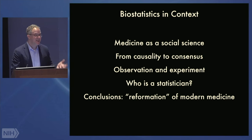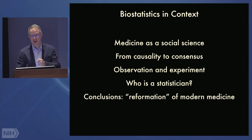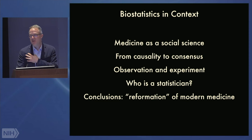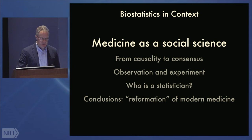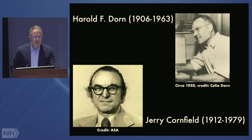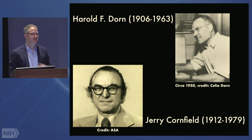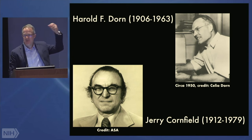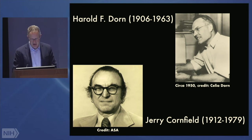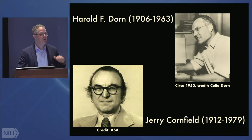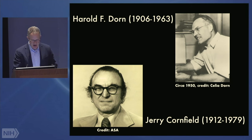Rather than focusing on epidemiology or traditional public health statistics, medicine just became one more field with variability, uncertainty, and causal complexity — areas best treated by statistics. The irony is that the NIH group transformed medicine not from being at the core of medicine, but from being outsiders who were imported into one of the most important funders of medicine in the mid-20th century. My first topic here is thinking about medicine as a social science.